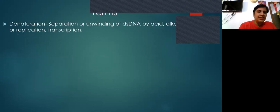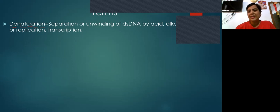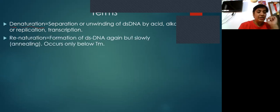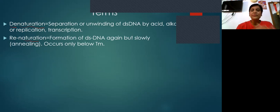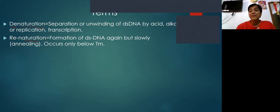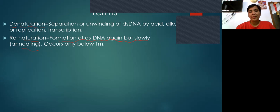Now, some important terms: denaturation means removal of the naturally existing state of DNA — it is the separation or unwinding of double-stranded DNA. Renaturation means converting denatured DNA back to its original state. If we increase the temperature, the bonds between the DNA strands break, producing denatured DNA. Renaturation is done slowly and carefully, and the slow formation of double-stranded DNA again is known as annealing. So denaturation, renaturation, and annealing are three separate terms.